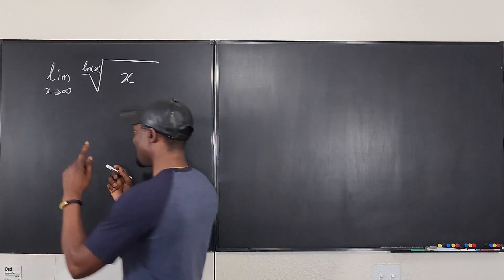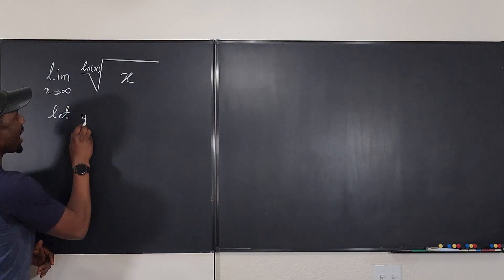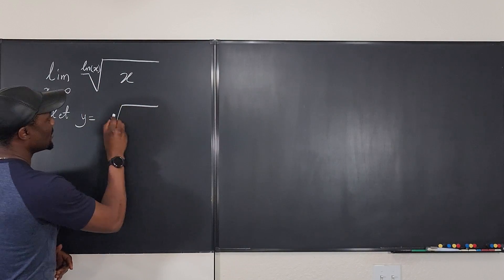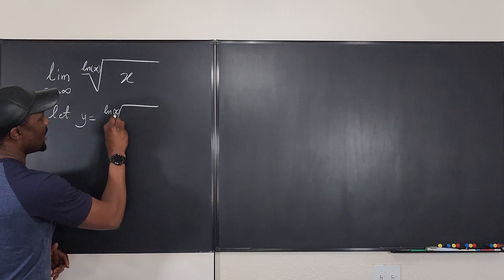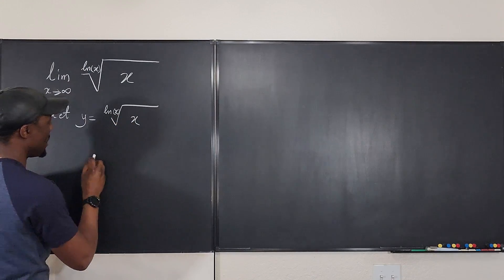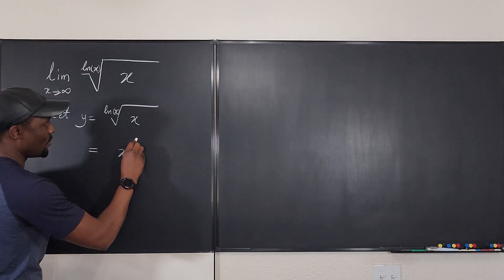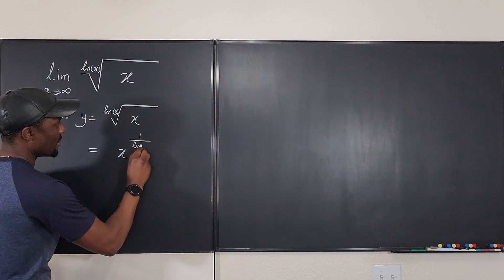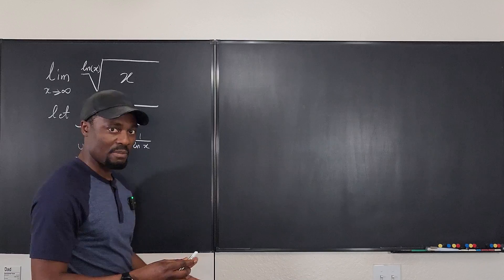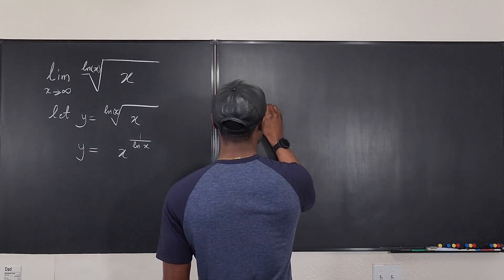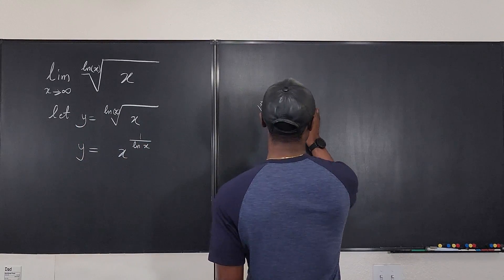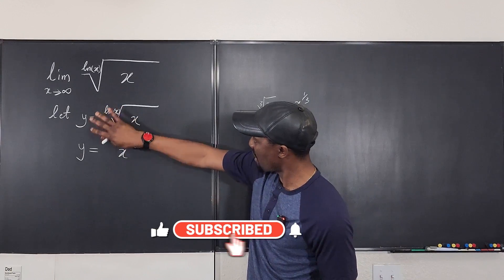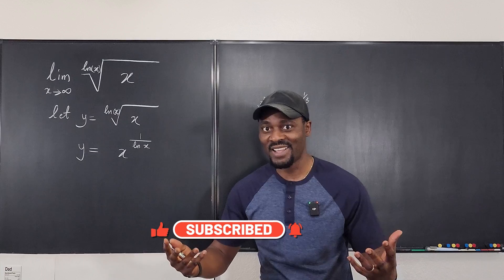Let y be equal to this expression, the ln(x) root of x. Well, we know we can rewrite this as x to the 1 over ln(x). Remember that if you take the cube root of anything, it's the same thing as x to the 1/3. So we can rewrite this expression this way, and once you write it this way, your eyes are gonna pop open and you'll go, oh, this looks easier than I thought it was gonna be.